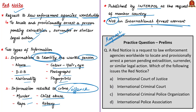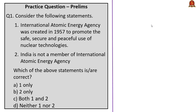Now let us move on to the practice and revision session. This question is about the International Atomic Energy Agency — two statements are given. First, the IAEA was created in 1957 to promote safe, secure and peaceful use of nuclear technologies — this statement is correct. The second statement about India's membership year is wrong since India has been a member since 1957. So the answer is option A.